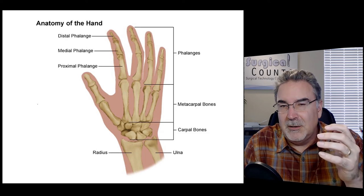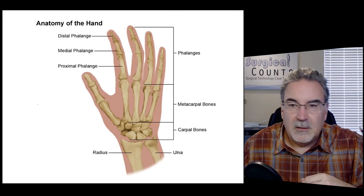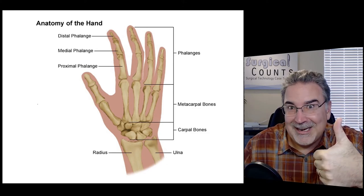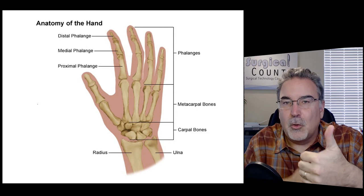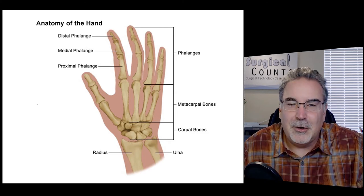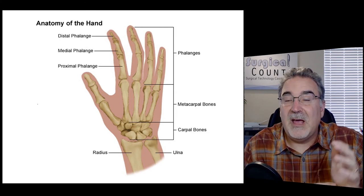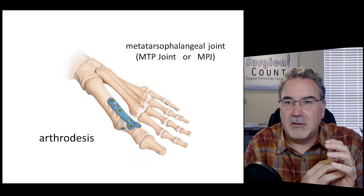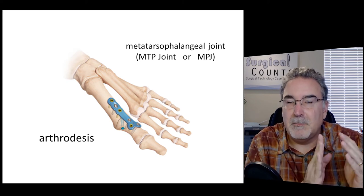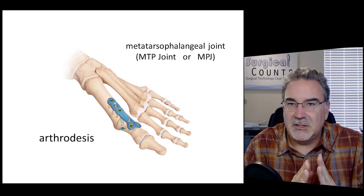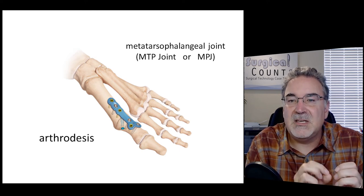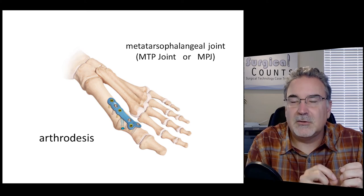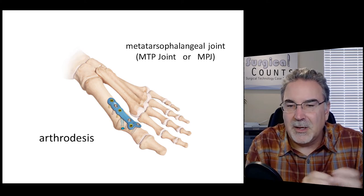To remember which is which: radius sounds like 'rad,' and that's the thumb side of the arm. In the foot, we have tarsals and metatarsals as equivalents to carpals and metacarpals. Often there's a problem with the joint between the metatarsal and the phalanges of the foot — the MTP or metatarsal phalangeal joint. We can go in and repair that joint, one way being to fuse it together with a plate — called arthrodesis — making essentially one large bone that no longer flexes.